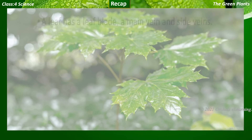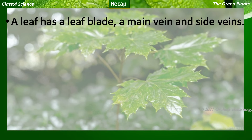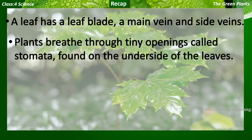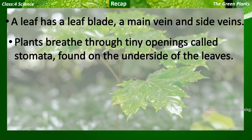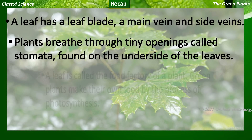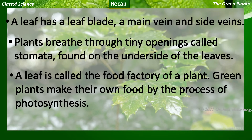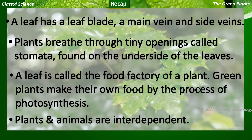Summary: a leaf has a leaf blade, the main vein, and side veins. Plants breathe through tiny openings called stomata found on the underside of the leaves. A leaf is called the food factory of a plant. Green plants make their own food by the process of photosynthesis, and plants and animals are interdependent.